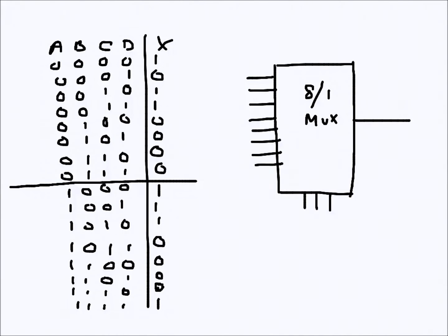This is a four-variable truth table and I want to implement it using an 8-by-1 MUX. One thing about MUXes is they all have an enable pin. The enable pin can be active low or active high. If it is active high, a one has to be given to enable it; if it is active low, a zero has to be given. Let's assume this enable is set to one here.